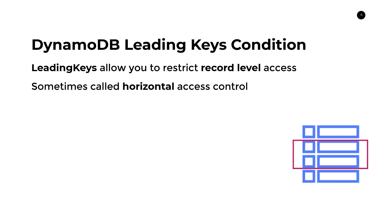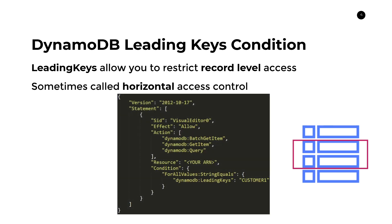Just for visualization purposes, it helps to use rows and columns to represent what we're restricting access to. Let's look at an IAM policy that allows us to do this. Looking at the action section, we're using DynamoDB BatchGetItem, GetItem, and Query — three read operations. This is a policy where we're only giving access to these three read permissions on our table.